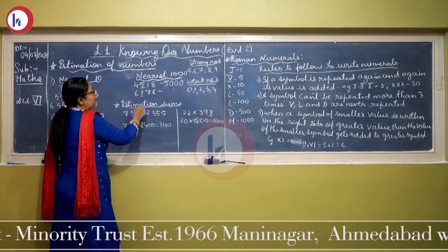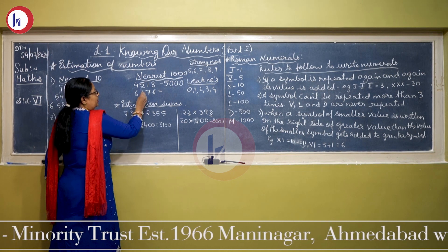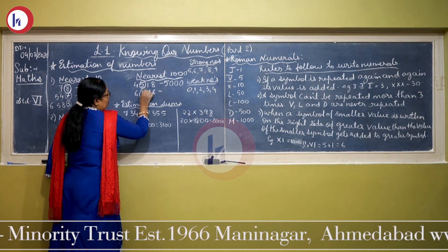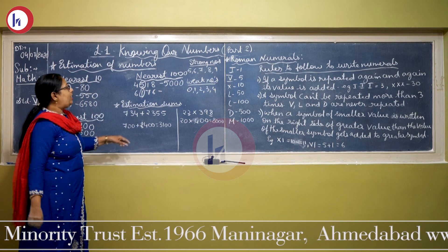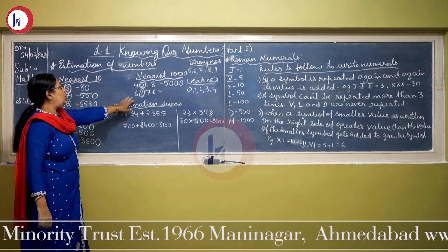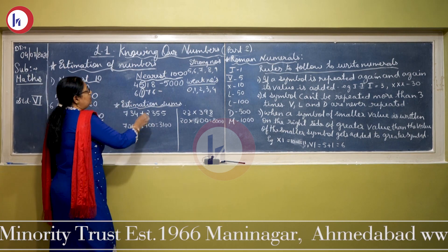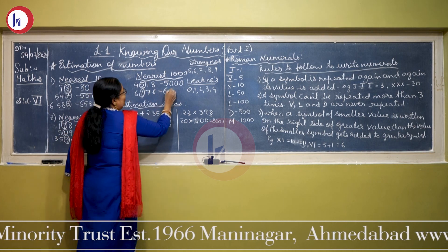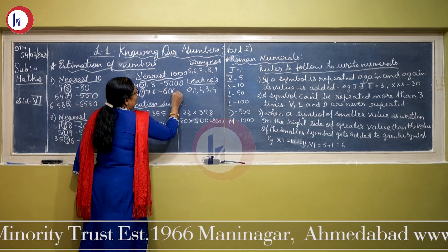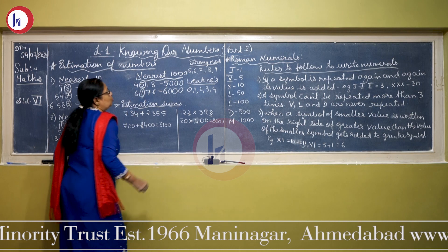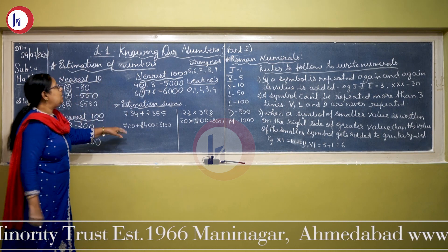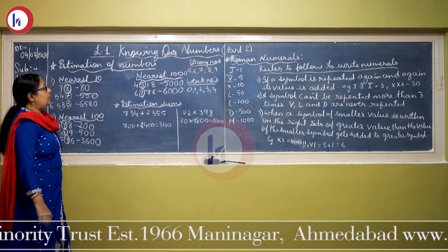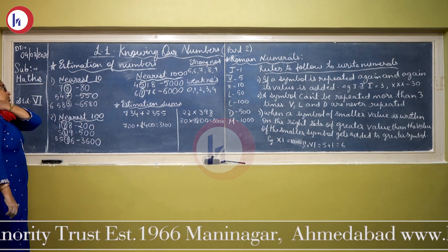Same way the next example: here the hundreds place is 1 — 1 is a weak number. So there will be no change in the thousands place. The hundreds, tens, and units places are replaced by 0. So 6176 is nearest to 6000.